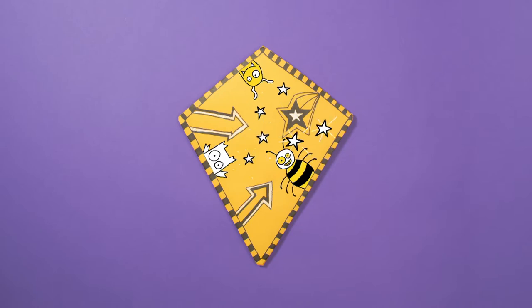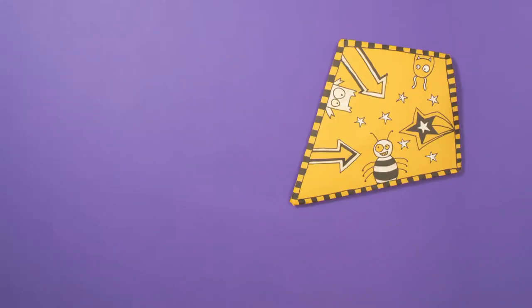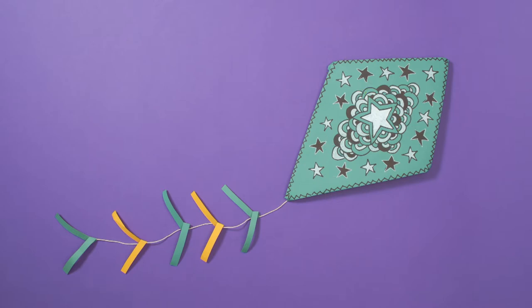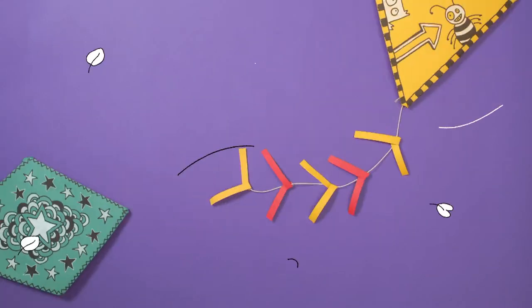You can add strips of colored paper to your string to create some ribbons. Awesome! And there you have your very own Tom Gates kite. You can use any colors or designs you like. All you need now is some wind. And off we go!